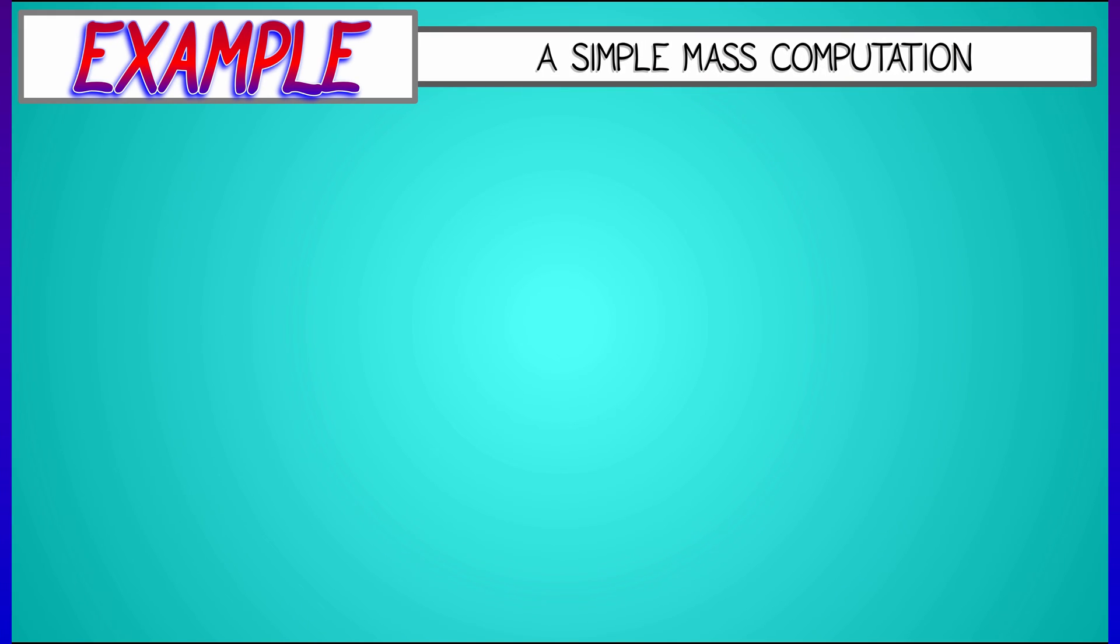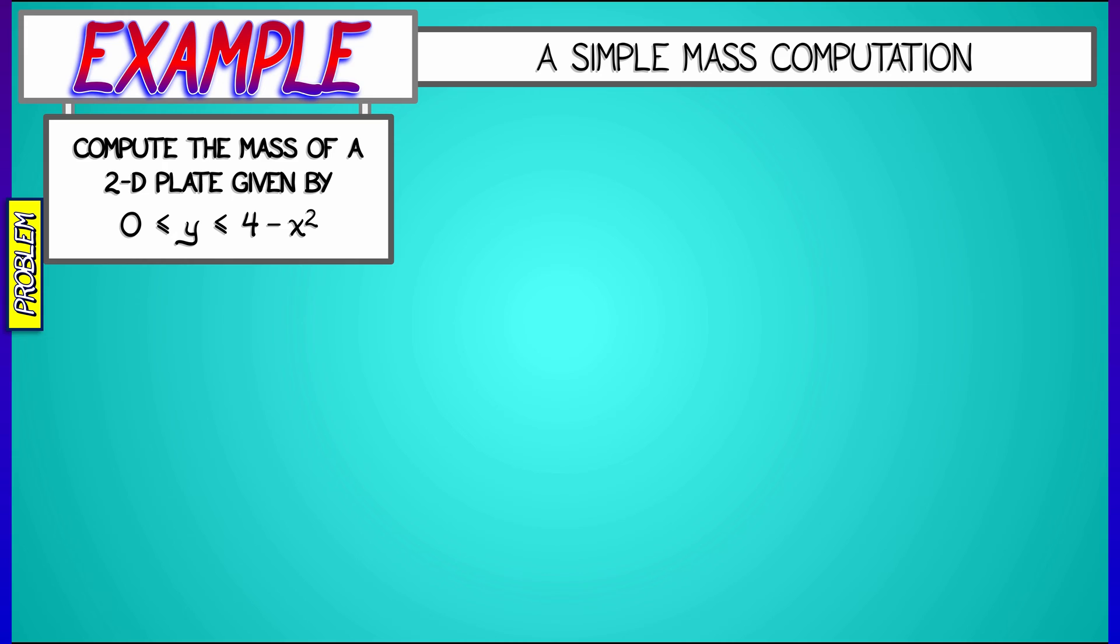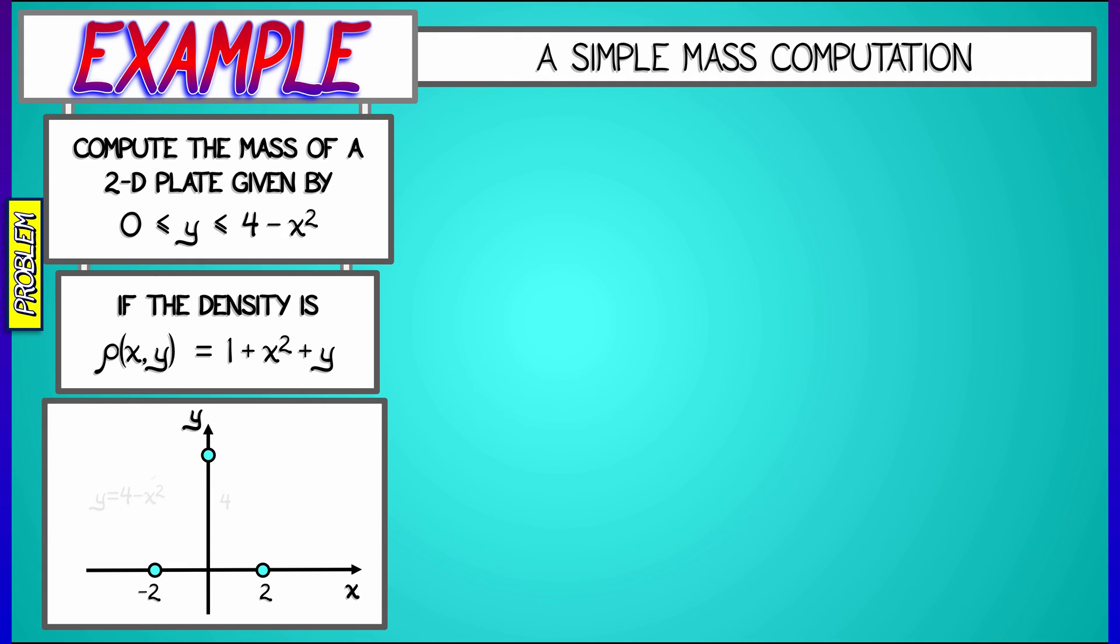Okay, for our next example, let's consider a simple mass computation, where we have some two-dimensional plate that is bounded above by the graph y equals 4 minus x squared and bounded below by y equals 0. If the density rho of x and y is variable, if it equals 1 plus x squared plus y, then what is the mass? Well, if we consider this region, if I look at the graph of y equals 4 minus x squared, I can see that for the region above the x-axis, it goes from x equals negative 2 to x equals positive 2.